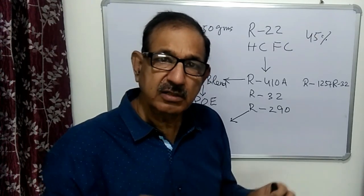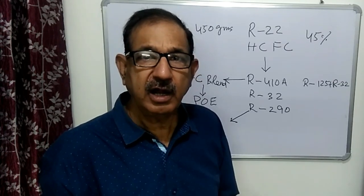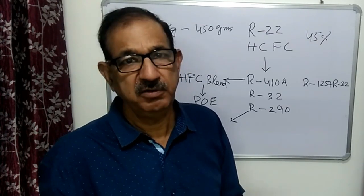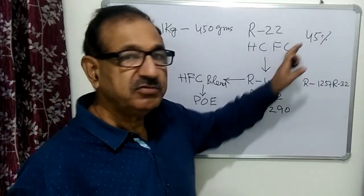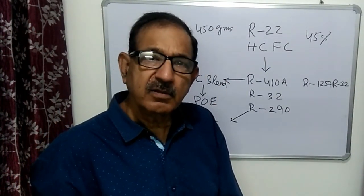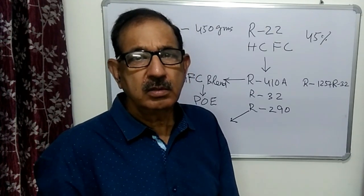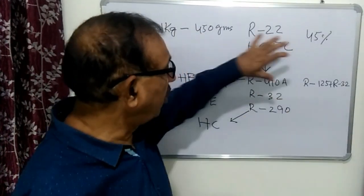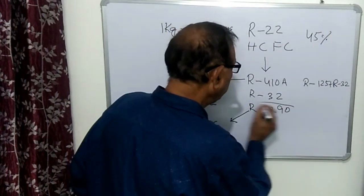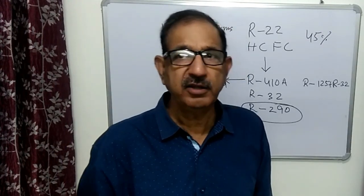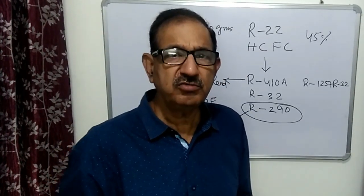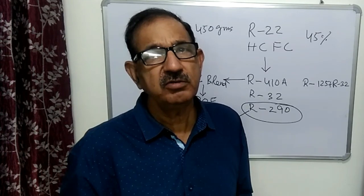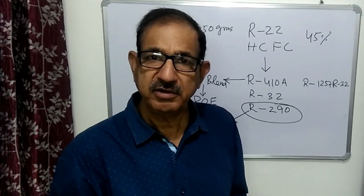Because R290 has the same pressure as R22 and the charge quantity is only 45%, the load on the compressor goes down, which increases the life of the air conditioner and gives better results. This refrigerant also has very low GWP and no ODP, making it a long-term refrigerant. Currently Godrej is using R290 in India, but in the coming years all companies will have to switch over to R290.